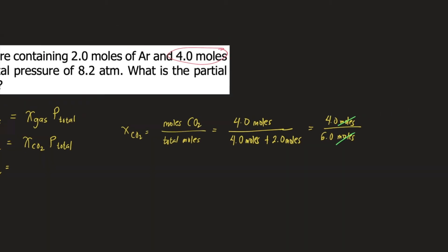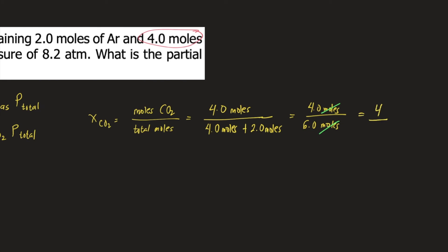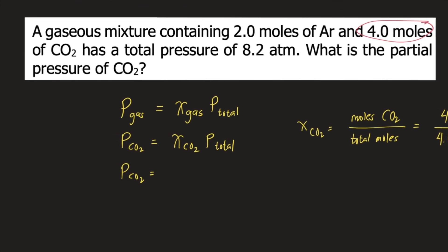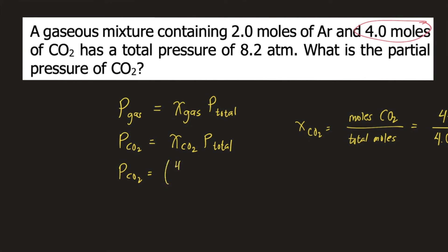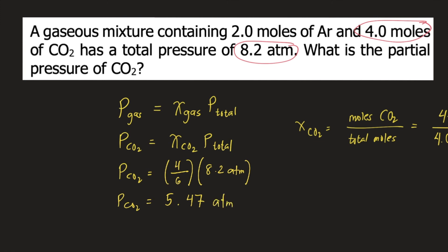So the mole fraction of CO₂ is 4 over 6. We plug that into the equation for partial pressure: the mole fraction, 4 over 6, times the total pressure of 8.2 atm. Solving for the partial pressure of CO₂: 4 over 6 times 8.2 equals 5.47 atm. This is the partial pressure of carbon dioxide.